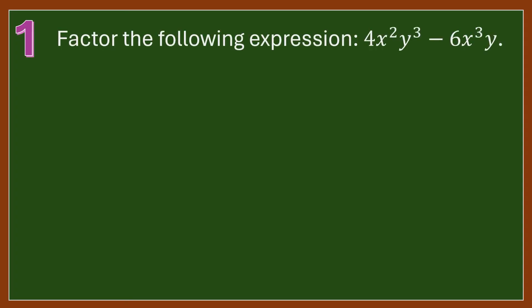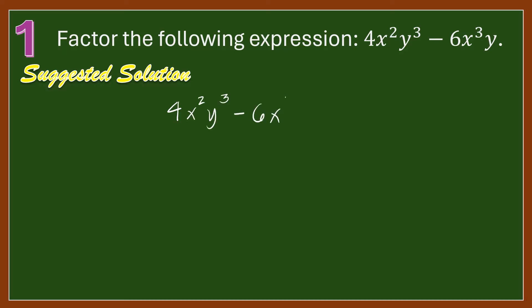Let us begin with Question 1: Factor the following expression: 4x squared y cubed minus 6x cubed y. For our solution, we will use common monomial factor. Notice that 2x squared y is a common monomial factor. So we have 2x squared y times the quantity 2y squared minus 3x. This is because 4x squared y cubed divided by 2x squared y is 2y squared, and negative 6x cubed y divided by 2x squared y is negative 3x.